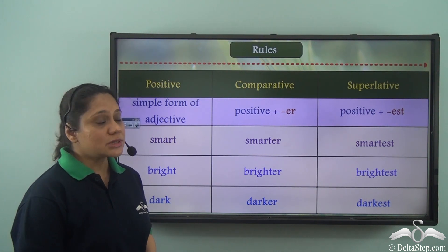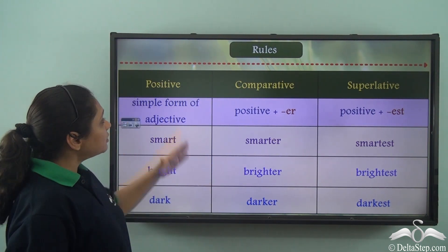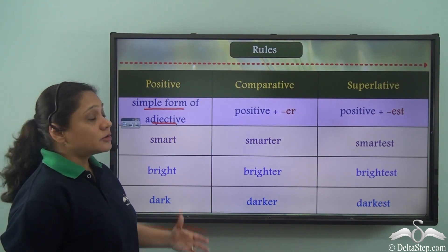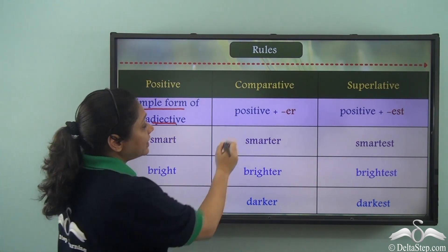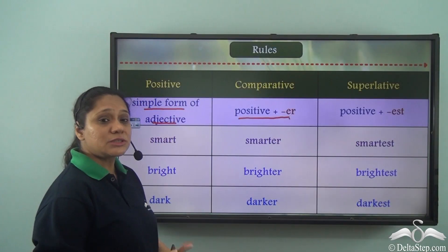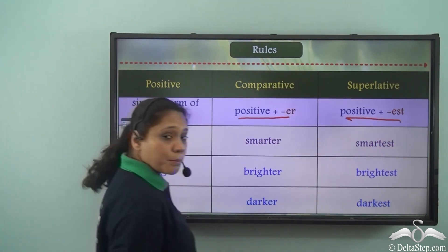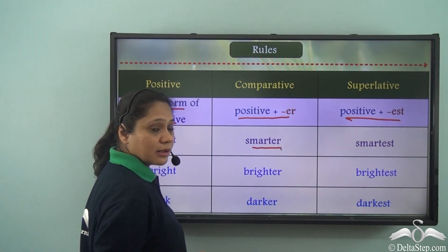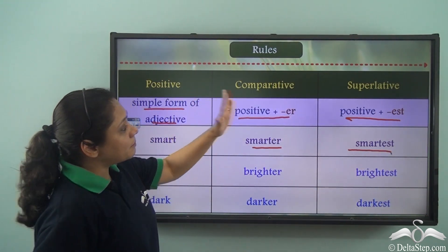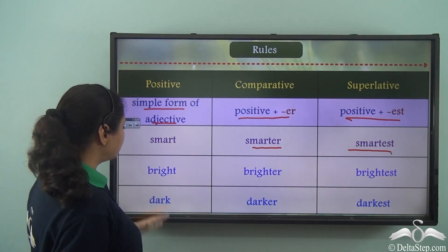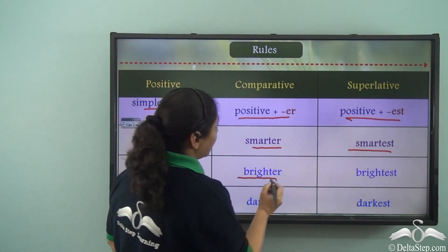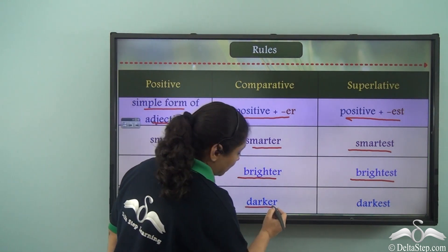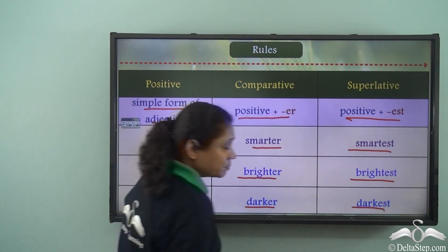The positive degree always uses the simple form of the adjective. To form the comparative degree we add -er to the positive form, and to form the superlative degree we add -est to the positive form. So 'smart' becomes 'smarter' and 'smartest,' 'bright' becomes 'brighter' and 'brightest,' and 'dark' becomes 'darker' and 'darkest' in the comparative and superlative degrees respectively.